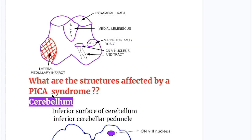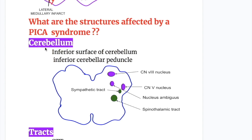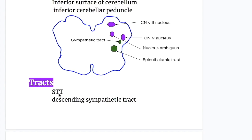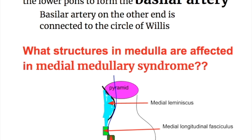What are the structures affected by posterior inferior cerebellar artery syndrome? One structure in the brain: the cerebellum — inferior surface of the cerebellum and inferior cerebellar peduncle. Two tracts: the spinothalamic tract and the descending sympathetic tract, shown in green circles. Three cranial nerves: five, eight, and the nucleus ambiguus — trigeminal nerve, vestibular nerve, and cranial nerves nine (glossopharyngeal), ten (vagus), and eleven (accessory). In medial medullary syndrome, the three structures affected are the pyramid, the medial lemniscus, and the hypoglossal nerve.